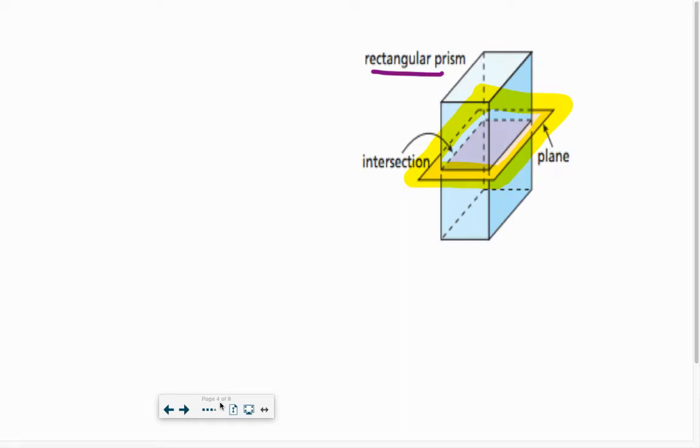And the cross-section, then, is the shape that we see in here that they so nicely color for us. Even though it's slightly slanted, the shape we see here is a rectangle. That's the cross-section of that shape.